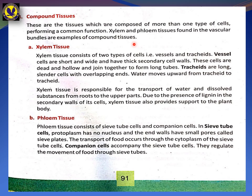Xylem tissue consists of two types of cells: vessels and tracheids. Vessel cells are short and wide and have a thick secondary cell wall. These cells are dead and hollow and are joined together to form long tubes. Tracheids are long slender cells with overlapping ends. Water moves upward from tracheid to tracheid.